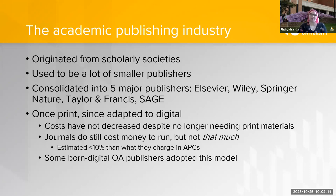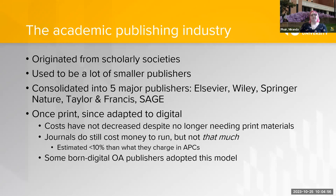Since basically everything is online now, publishers have adapted to digital. You can see where they would need money in the past — printing books, shipping, binding, all the costs of physical materials. You'd think they'd save money just hosting things online, but the cost of subscribing to these serial publications hasn't decreased even though print materials aren't needed anymore. In fact, costs have gone up a lot. It's estimated that it costs less than 10% of what they charge in APCs to actually run a journal.